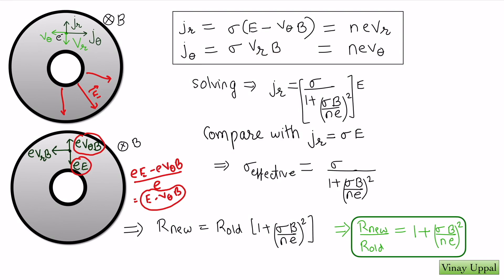Now I have to calculate Jr in terms of the electric field, but I am encountering the variables Vθ and Vr. Fortunately, I can express Vθ and Vr in terms of the current densities using J equals NeV. So Jr equals NeVr and Jθ equals NeVθ. These are the current densities in terms of the respective radial and tangential velocities. These are very simple simultaneous equations.